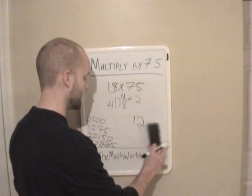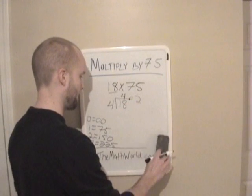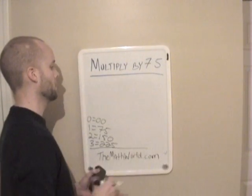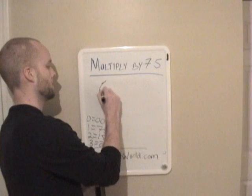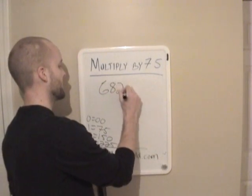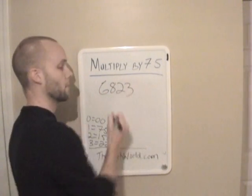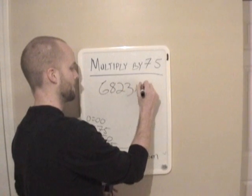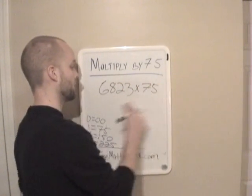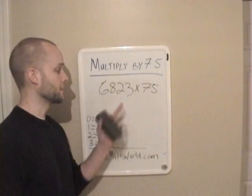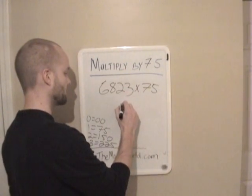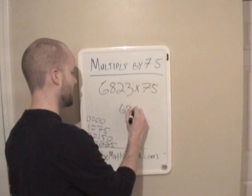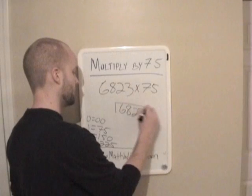So that's a small one. We'll go ahead and do a bigger one here. Let's try 6,823. Why not? Times 75. The first thing we're going to do again is divide this number by 4.